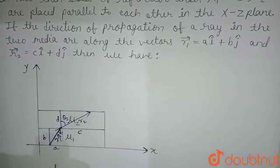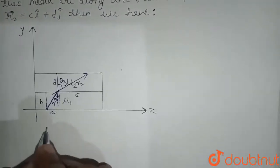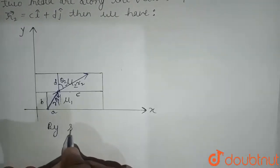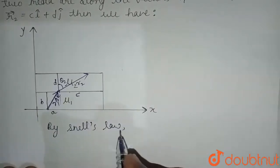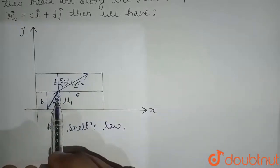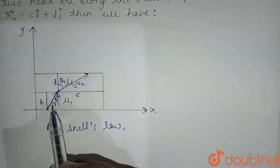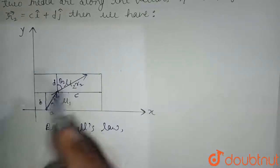Now by Snell's law, we can write: Snell's law states that the refractive index of the incident side times sine θ equals the refractive index of the refracted side times sine θ.